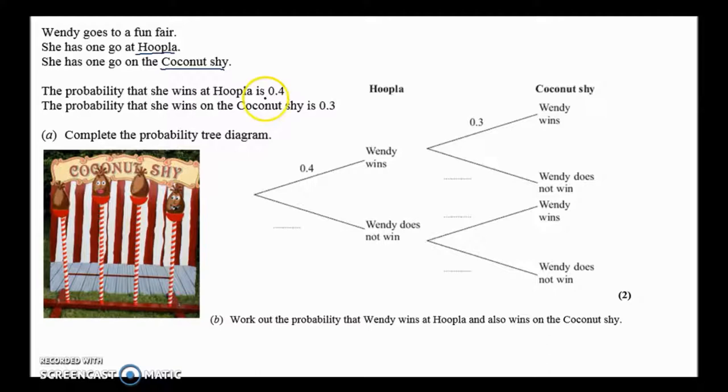So the probability that she wins at hoopla is 0.4. The probability that she wins on the coconut shy is 0.3, so that's like a 30% chance, 30% chance she's going to win on the coconut shy. I reckon that should probably be like 1% chance, maybe that's just my throwing skills.